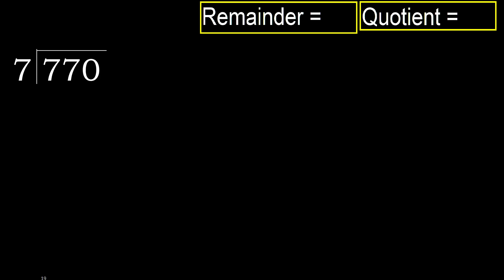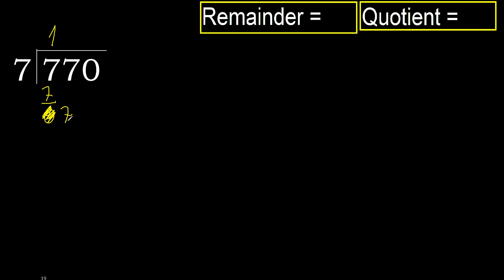770 divided by 7. 7 is not less, therefore with 7: 7 multiplied by which number is nearest to 7 but not greater? 7 multiplied by 2 is 14, which is greater. Multiplied by 1 is 7, ok, not greater. Subtract: 7 minus 7 is 0. Next, bring down the 0. 7: 7 multiplied by 1 is 7.